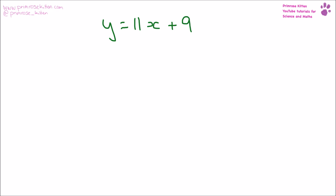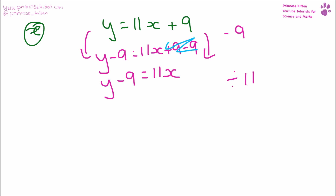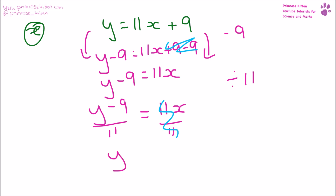y = 11x + 9, and again we want to make x the subject of the formula. The first thing we need to do is minus nine from each side, so y − 9 = 11x + 9 − 9. The plus nine and the minus nine cancel out to give zero, so we end up with y − 9 = 11x. We can now divide by 11, so we end up with y − 9 over 11 = 11x over 11. 11 over 11 cancels out to give us one, so we end up with y − 9 over 11 = x.